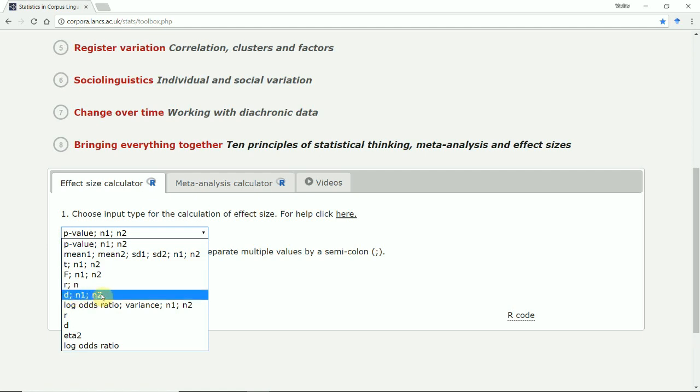D is Cohen's D, again, two sample sizes, log odds ratio, variance, and two sample sizes, R, D, eta squared, or log odds ratio, just the simple values here. So we have a range of options we can choose.